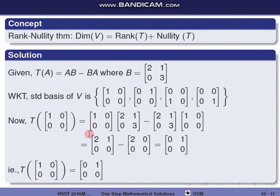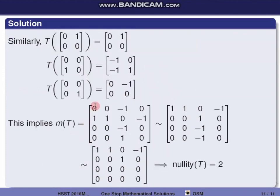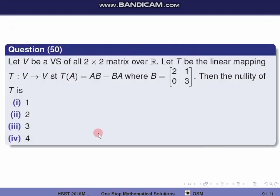We form the matrix representation of T and write the columns corresponding to each standard basis element. After row reduction to row echelon form, we find two linearly independent rows, so rank of T = 2. By the rank-nullity theorem, dimension of V = rank + nullity. With rank 2, the correct option is the second one.